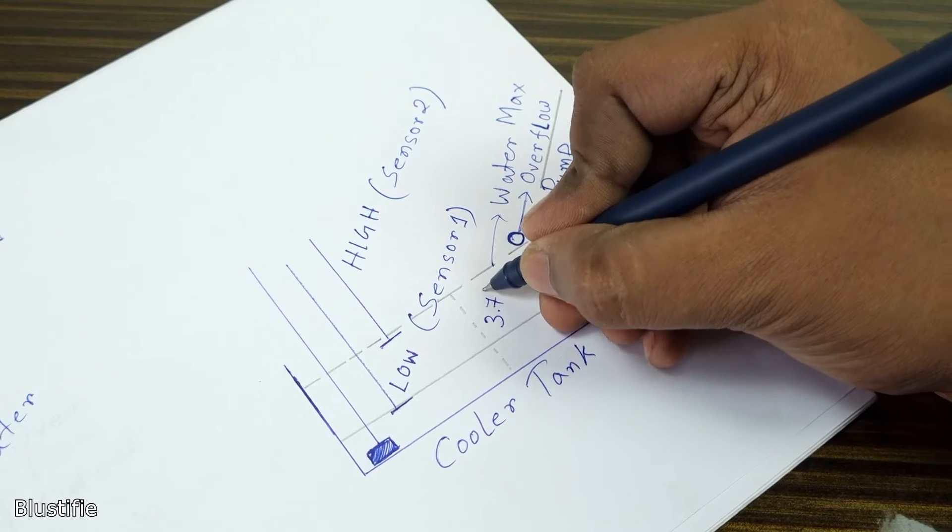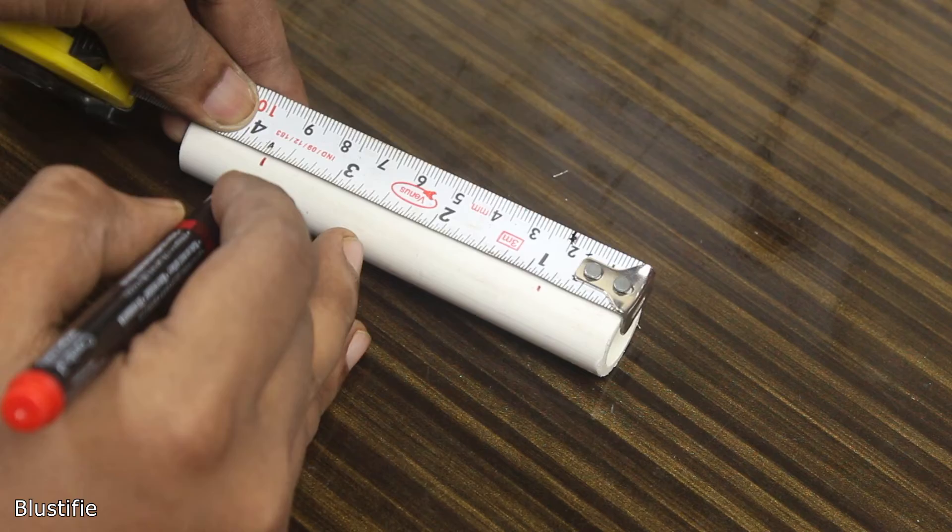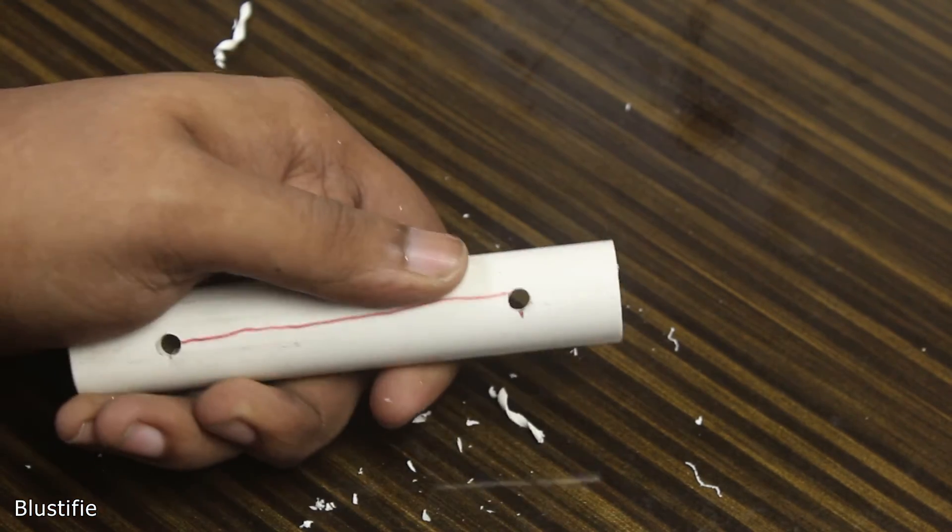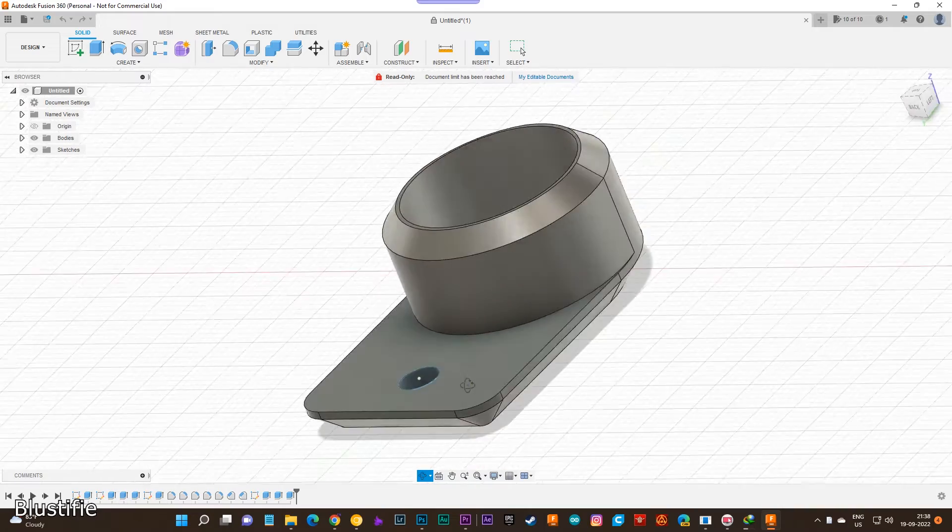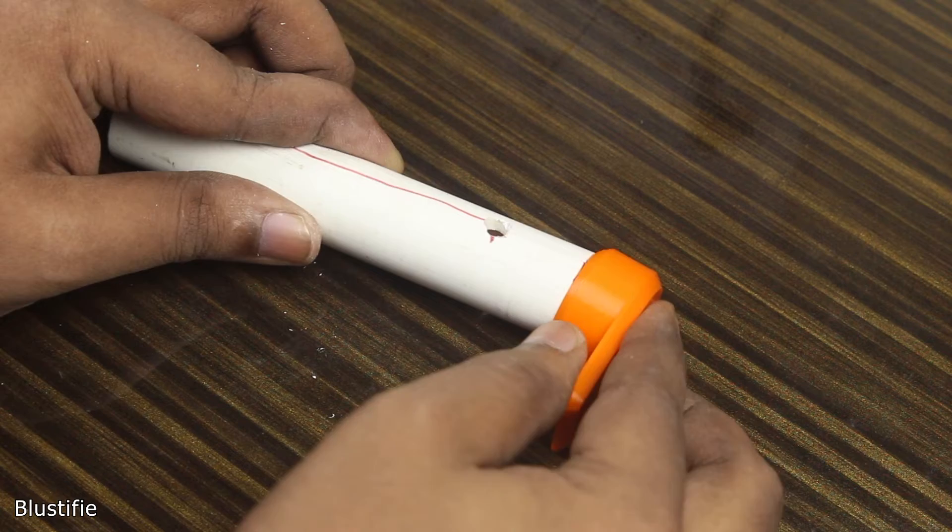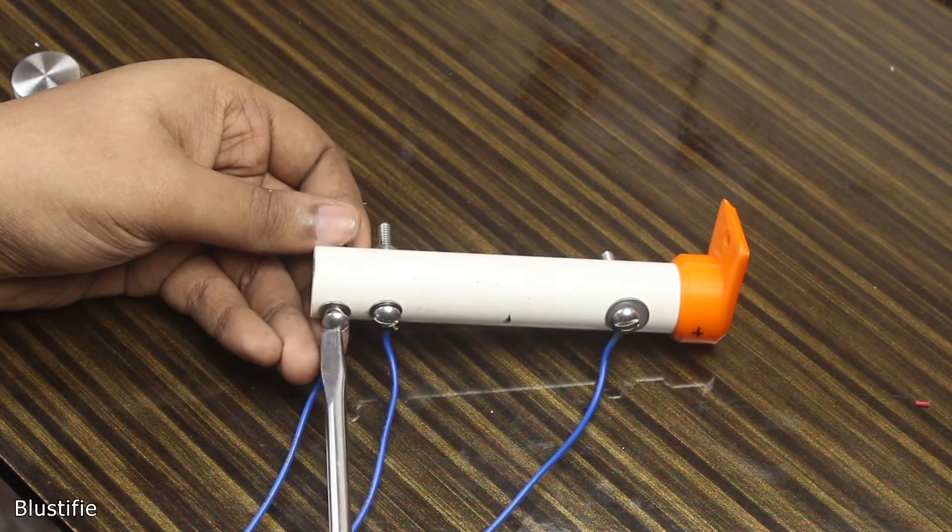To keep these values in mind, I have used a PVC pipe and drilled holes in suitable locations. To mount this PVC pipe inside the body, I have designed this part in Fusion 360, printed it, and set it on the pipe after wiring up the nuts and bolts.